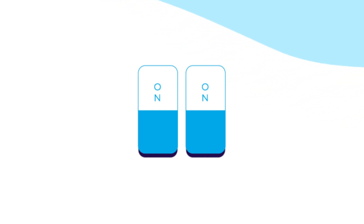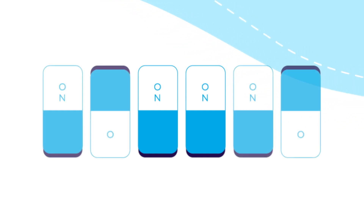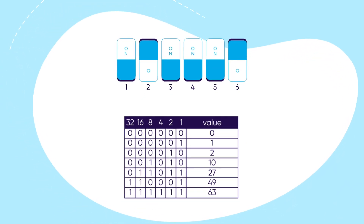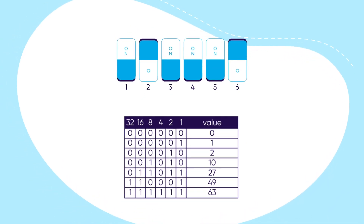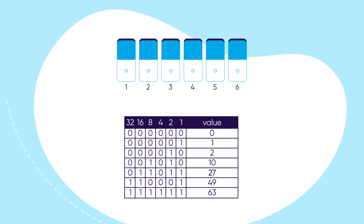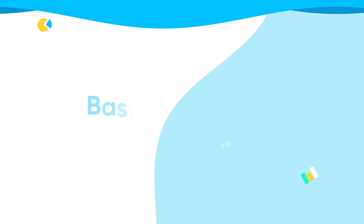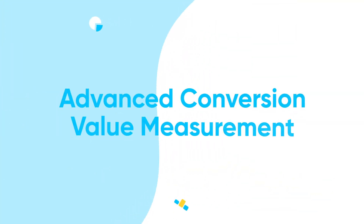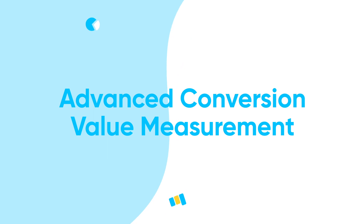When turned on, the binary digit is 1. Apple provides developers 6 bits in total. By turning on or off the 6 bits, there are 64 different combinations available, the lowest value being 0 and the highest 63. You, as the developer, will get to decide how you use the bits and set what each combination means for you in terms of what you want to measure.